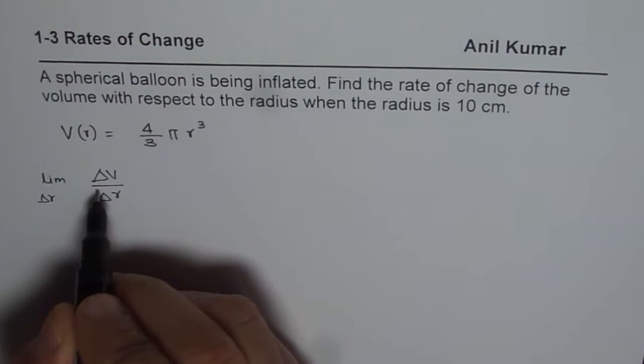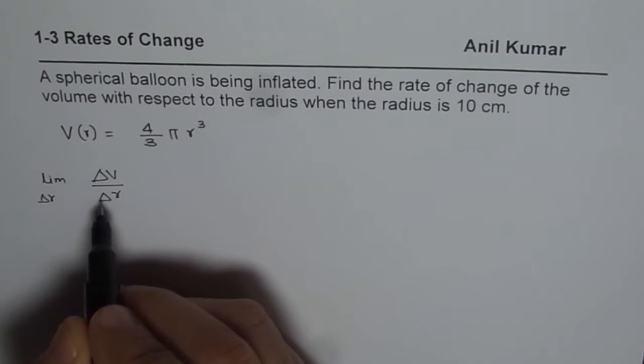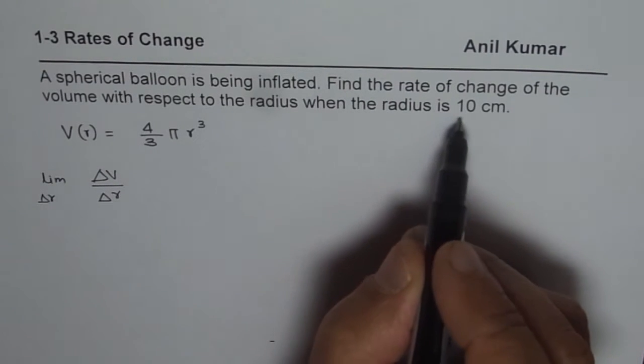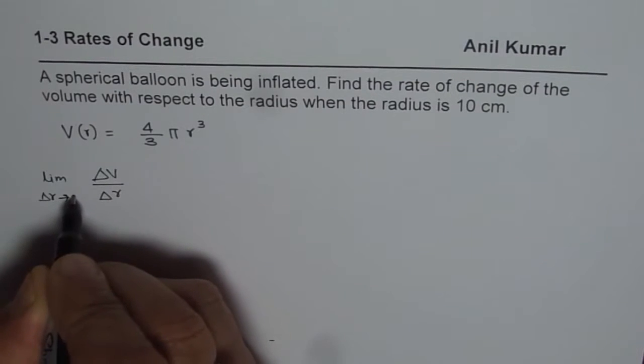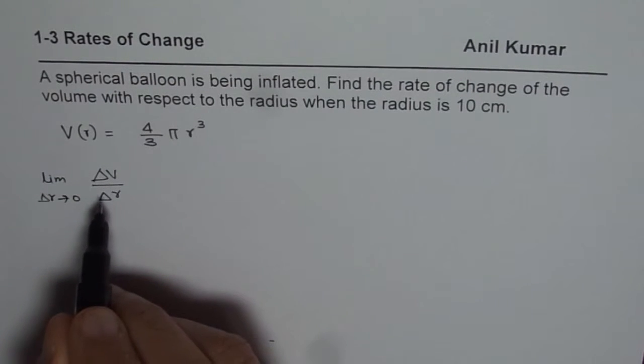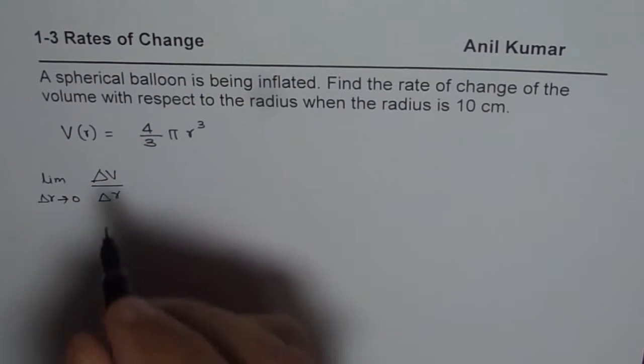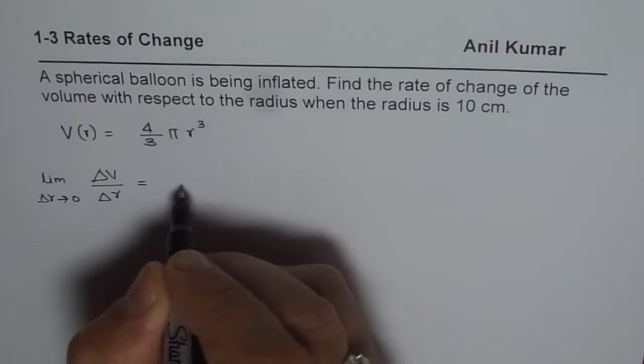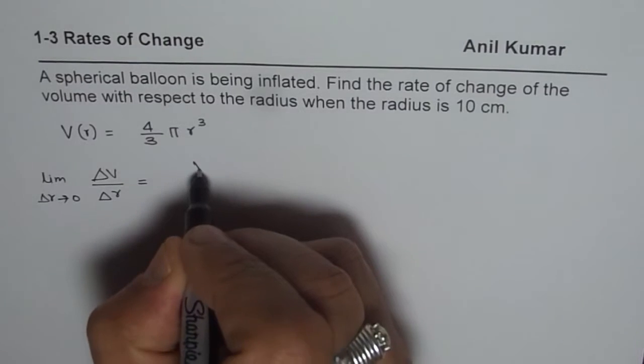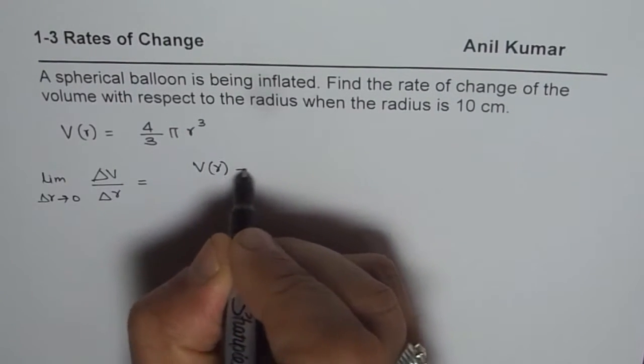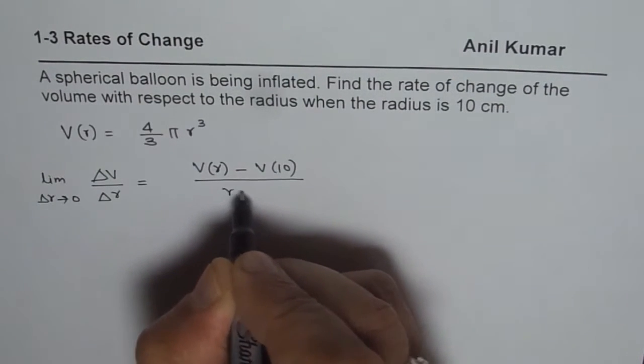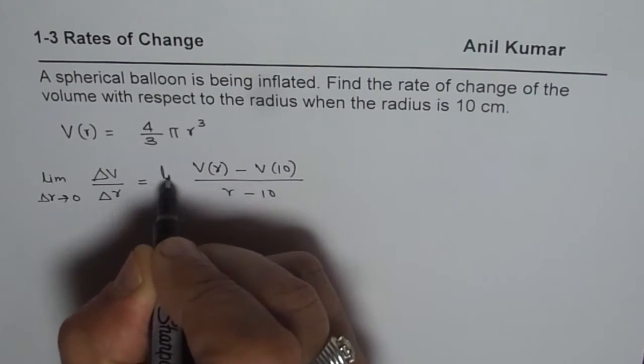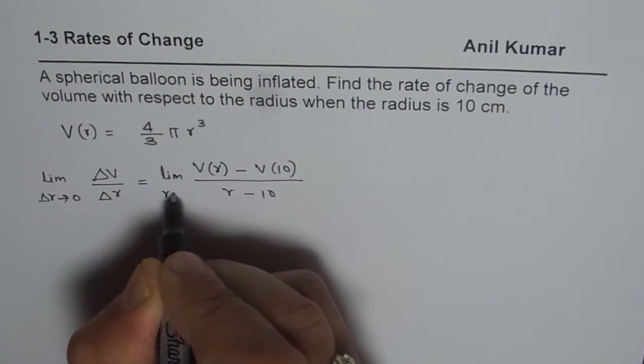In our case, define rate of change of volume with respect to radius when the radius is approaching 10, but the difference delta r should be approaching 0 for instantaneous rate of change. So we can use our alternate formula, which says that we can have volume at r minus volume at 10, divided by r minus 10, limit r approaches 10.